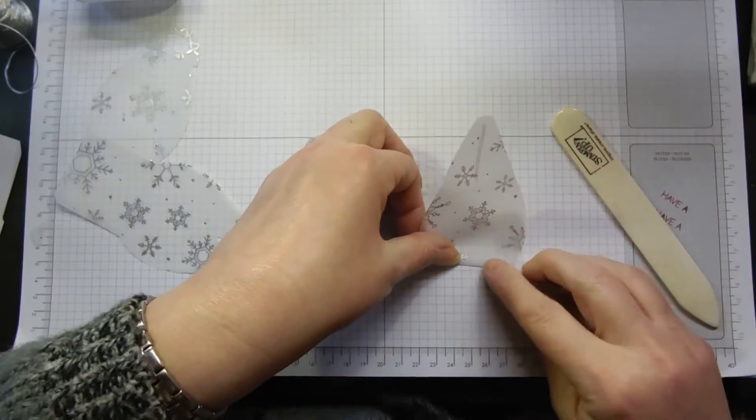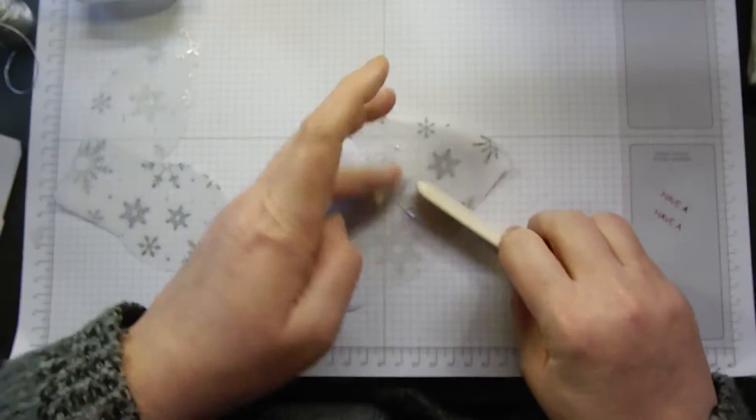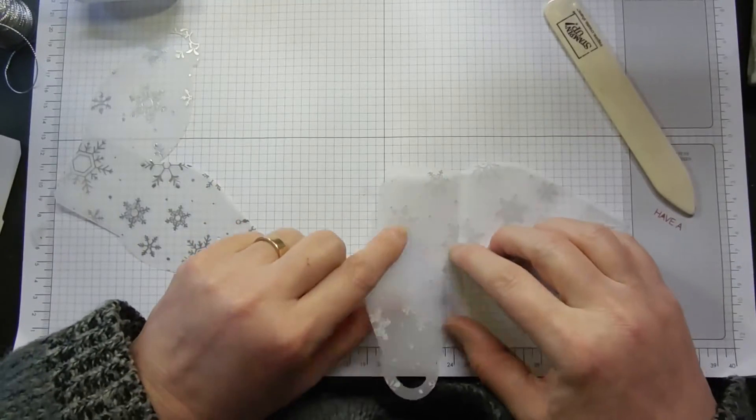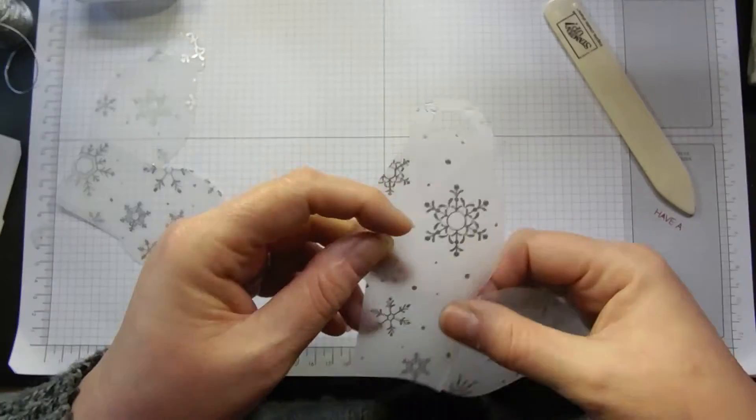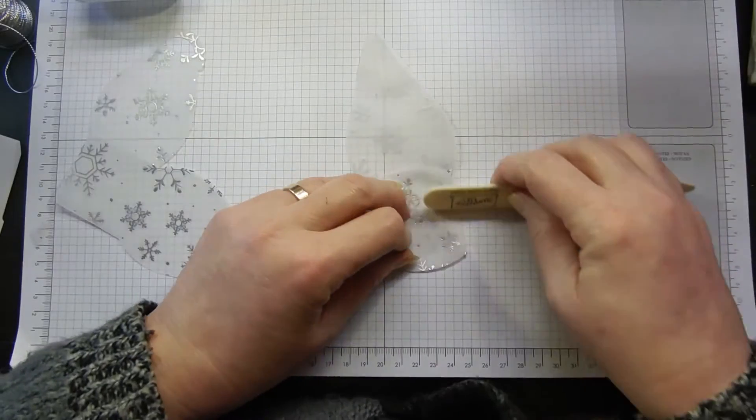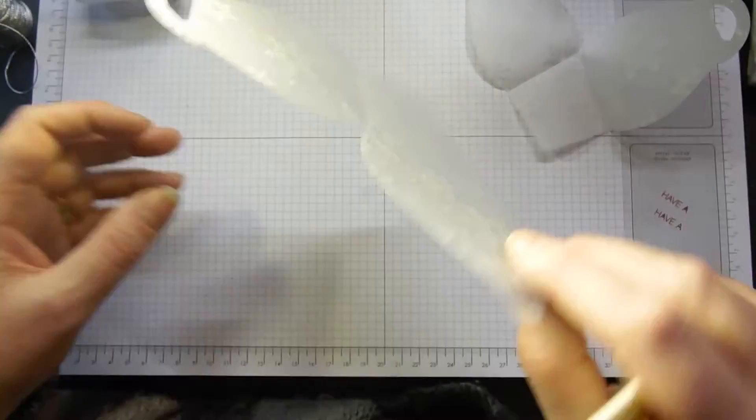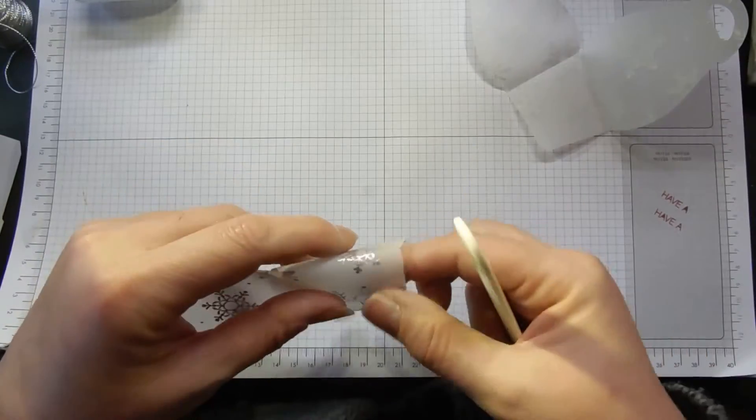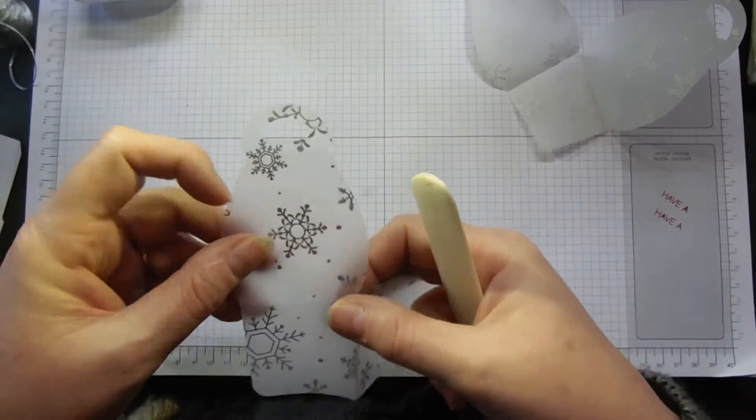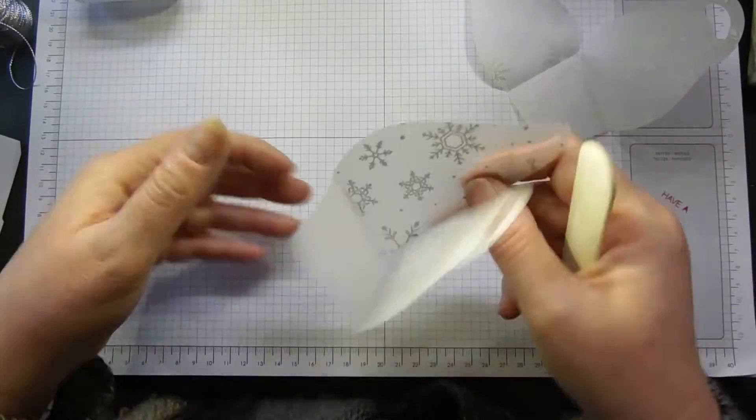You just want to follow the score lines, and you do need to be fairly accurate. Gently fold, and if you haven't got it quite right, just redo it - it won't show. Pop your bone folder across. There's one fold there, and then you've got another fold here. I do it by hand first to make sure it's in the right place, then your bone folder. Repeat that with this piece, again making sure you've got the right side facing.